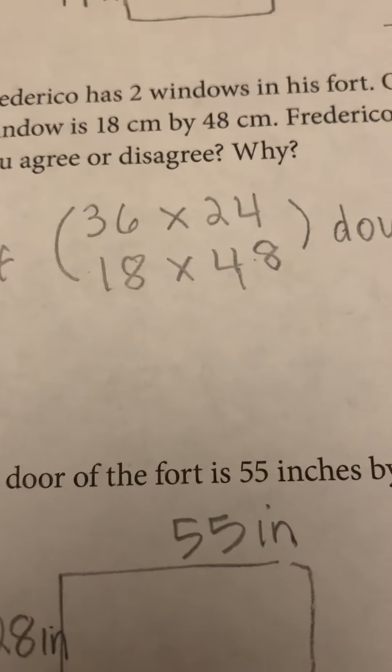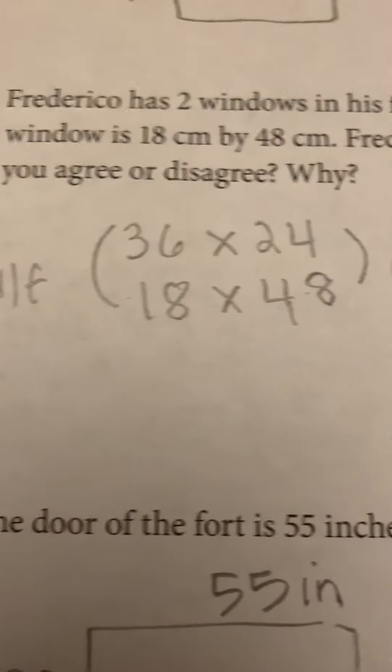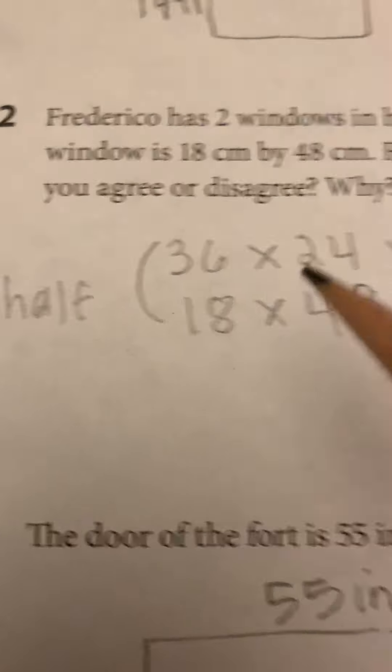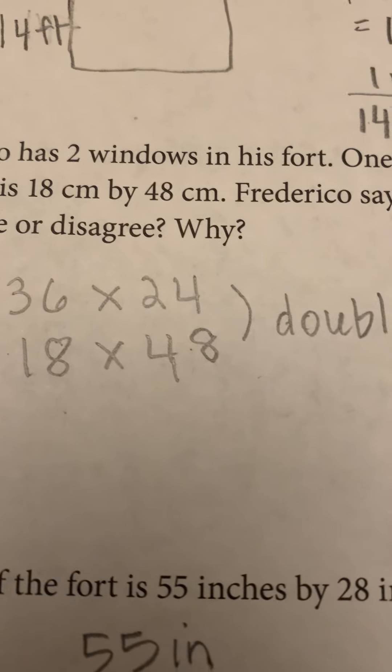Then we didn't even have to solve. Which one's bigger? The 36 times 24, the 18 times 48. This is half. This is double. So they, whatever the number is, they both equal the same amount.